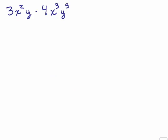Let's try this one. 3X squared Y times 4X cubed Y to the fifth. First of all, remember what this really means. It means 3 times X squared times Y times 4 times X cubed times Y to the fifth.